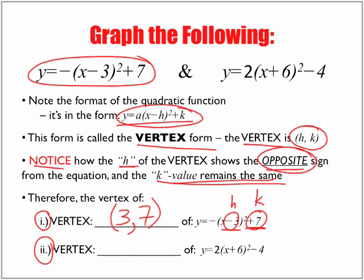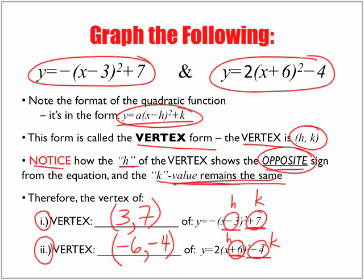Now, in terms of the vertex for the next example, again, here's our h, here's our k. Remember as we said, h, opposite. So positive 6 is inside the brackets, outside when we write down our h value, it's the opposite. So it becomes negative 6. In terms of k, k remains the same, k is negative 4. So therefore, the vertex of this equation right here is (negative 6, negative 4).